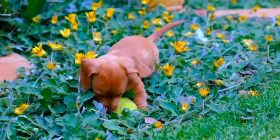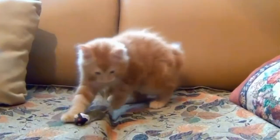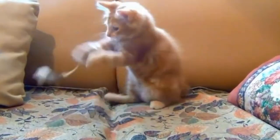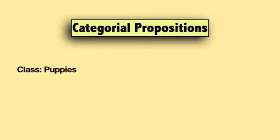At a certain point in our lives, we learn that puppies are cute. We also learn that kittens are fluffy. These are both examples of what are called categorical propositions. Categorical propositions are about the relationships between classes of things. So when we say that puppies are cute, we're saying something about the relationship between the class or category of puppy and the category of cute things.